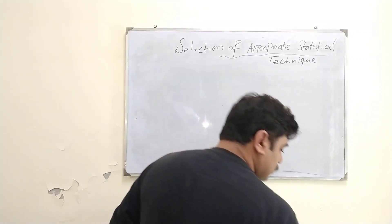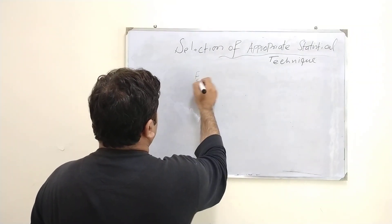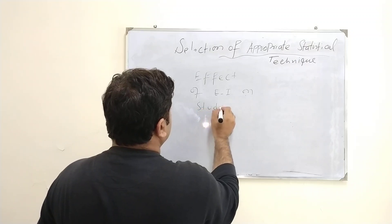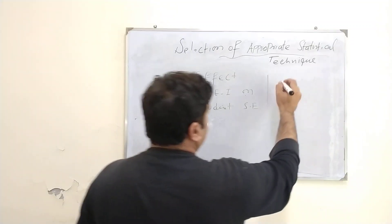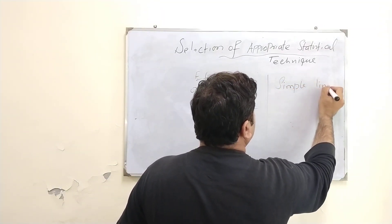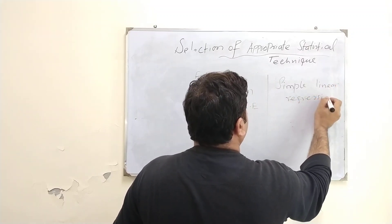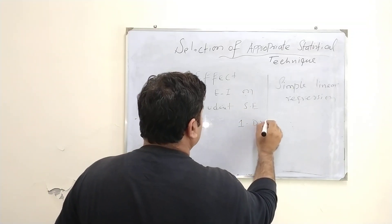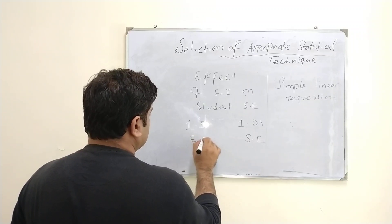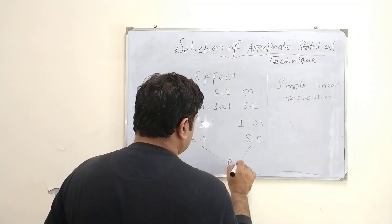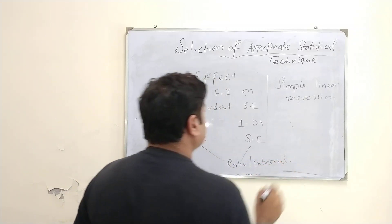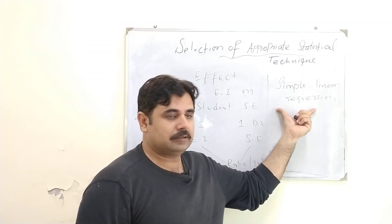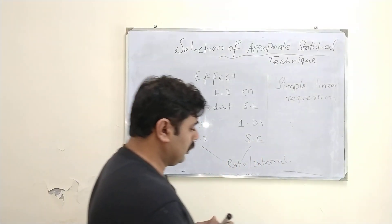If the purpose is to check the effect of one variable on another — for example, the effect of emotional intelligence on student self-efficacy — then you use simple linear regression, because you have one independent variable and one dependent variable both measured at ratio or interval level. If you increase the number of independent variables, then you apply multiple linear regression.